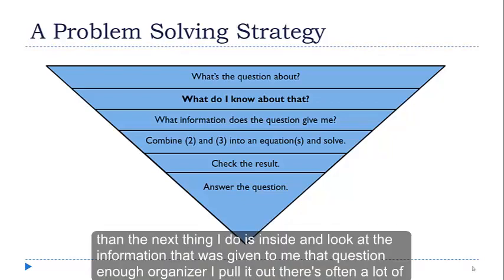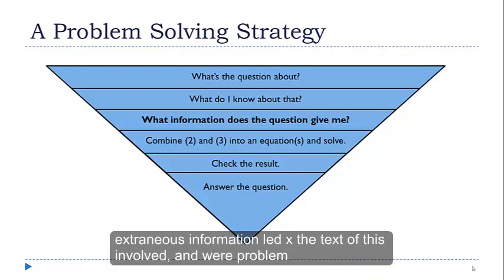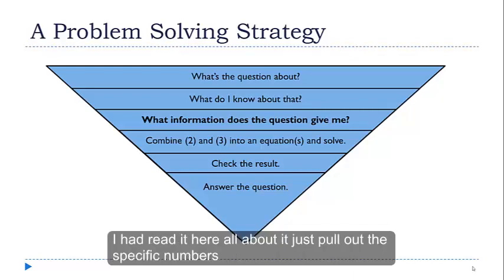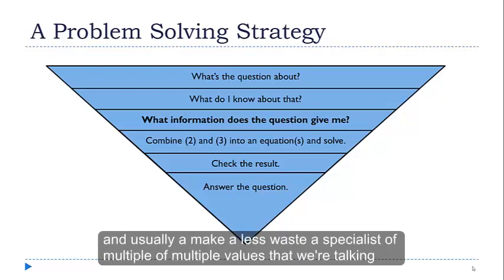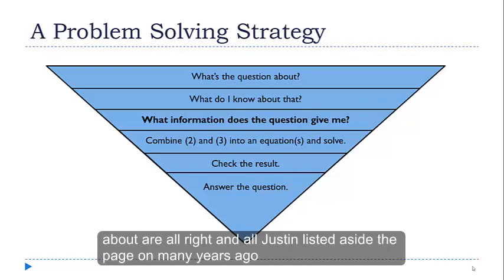The next thing I do is I look at the information that was given to me in the question and I organize it. I pull it out. There's often a lot of extraneous information, a lot of extra text that's involved in a word problem. I'm trying to clear all of that out and just pull out the specific numbers. Usually I'll make a list, especially if there's multiple values.